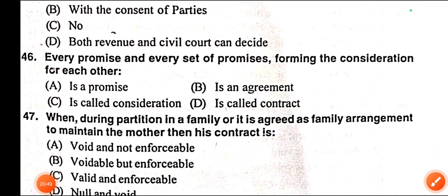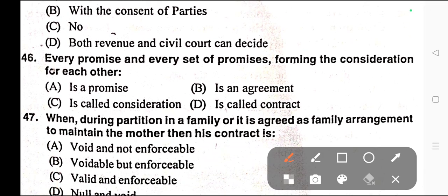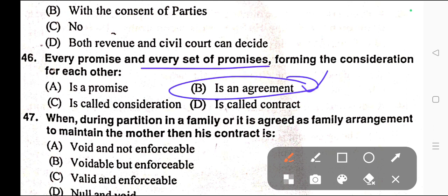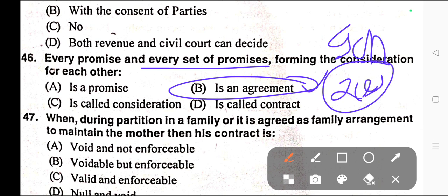Question number forty-six: Every promise and every set of promises forming the consideration for each other — A) Is a promise, B) Is an agreement, C) Is called consideration, D) Is called contract. Correct answer is option B — every promise and every set of promises is an agreement, provided under Section 2 Clause E of the Indian Contract Act.